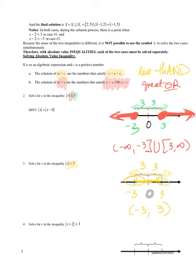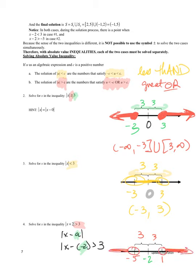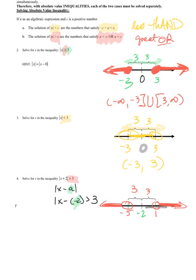Looking at the next example — this is like X minus (negative two) is greater than three. So I'm starting at negative two on the number line and going three units in either direction: negative two plus three equals one, and negative two minus three equals negative five. Since I need to be greater than three units away, the solution set is: negative infinity to negative five open, union one to infinity open.